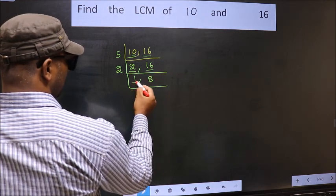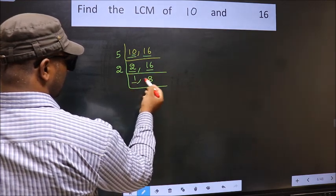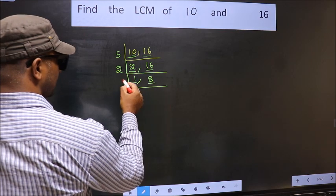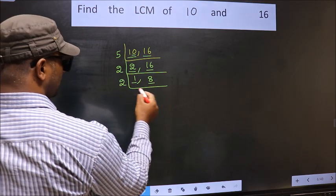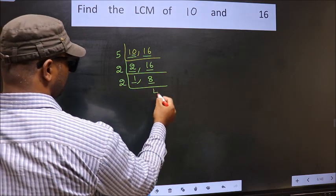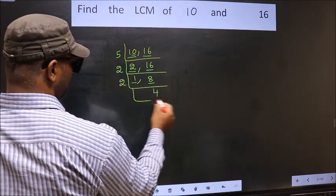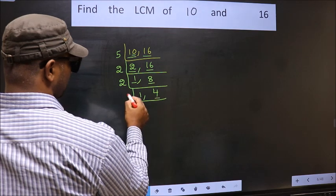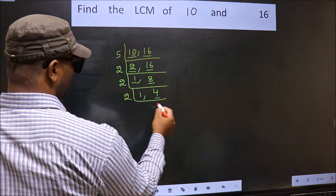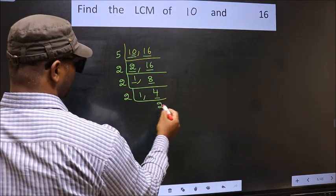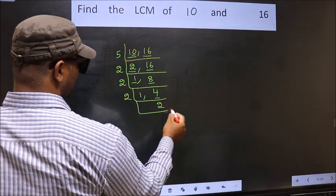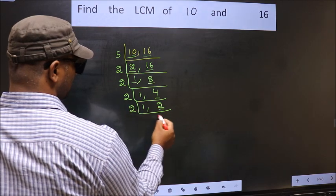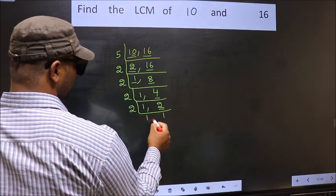Now, we got 1 here, so focus on the other number 8. 2 times 4 is 8. Now, 2 times 2 is 4. Now we have 2, and 2 is a prime number, so 2 times 1 is 2.